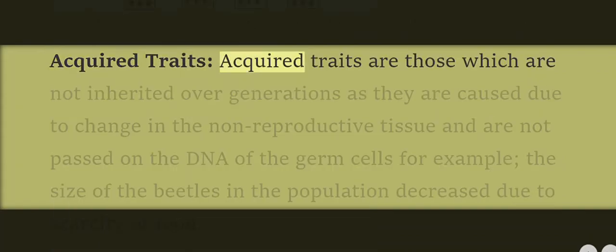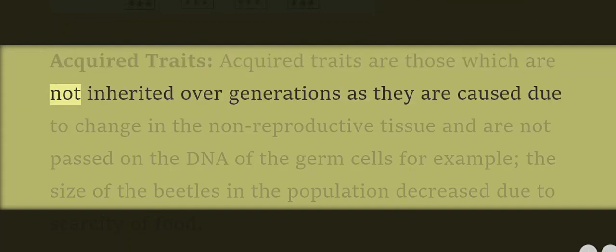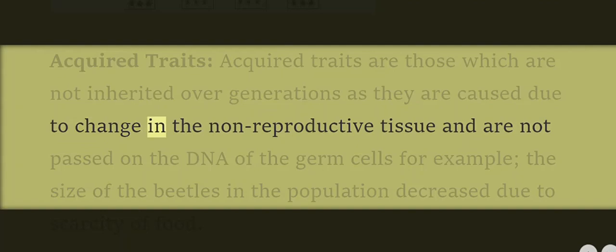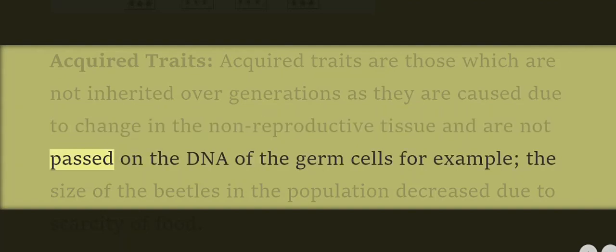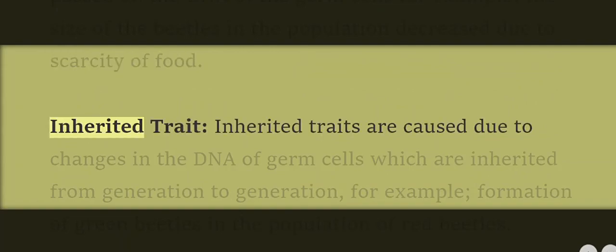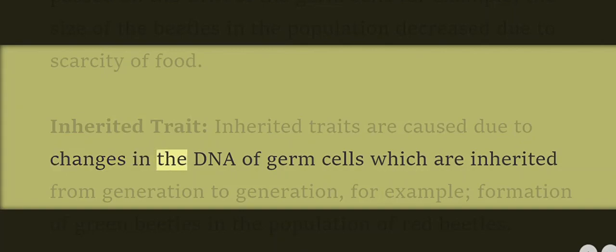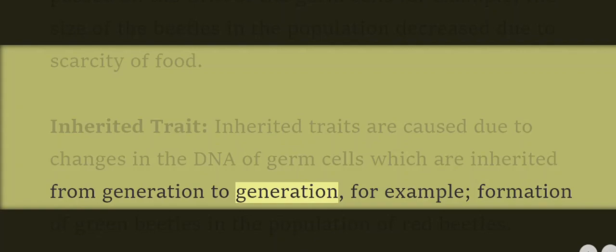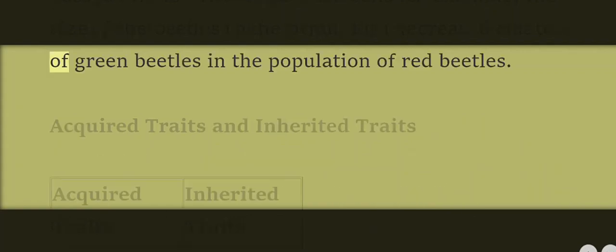Acquired traits are those which are not inherited over generations, as they are caused due to change in non-reproductive tissue and are not passed on to the DNA of the germ cells. For example, the size of the beetles in the population decreased due to scarcity of food. Inherited traits are caused due to changes in the DNA of germ cells, which are inherited from generation to generation. For example, the formation of green beetles in a population of red beetles.